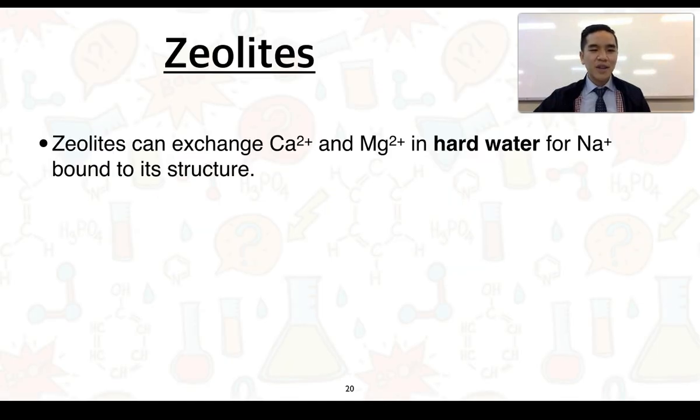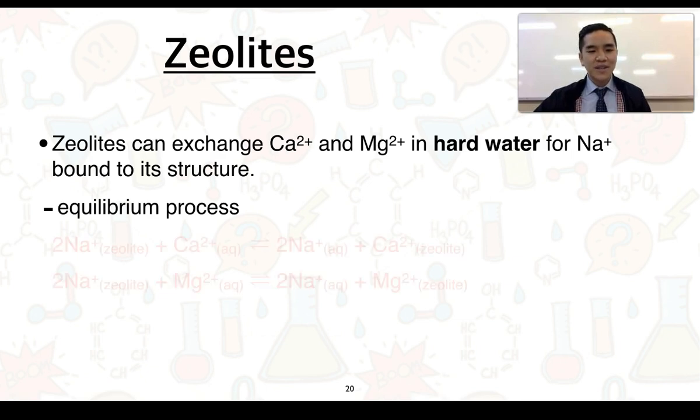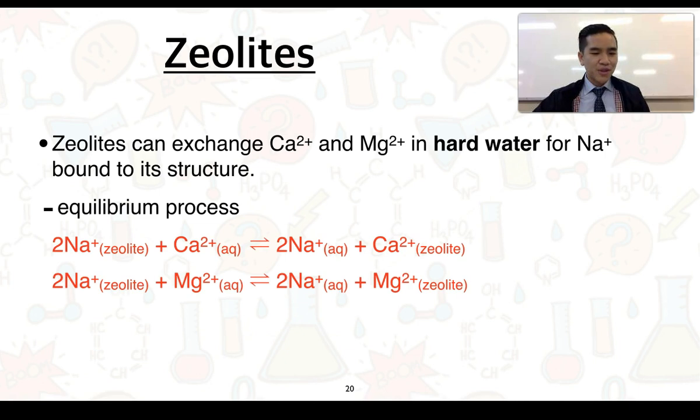To summarise, zeolites can exchange calcium and magnesium ions in hard water for sodium ions bound to its structure. It's important to note that this is an equilibrium process. We can represent this equilibrium process shown below here. So we have sodium ions bound to the zeolite structure, calcium ions in solution, existing in equilibrium with sodium ions in solution, and calcium ions attached to the zeolite. And likewise for magnesium ions in solution and adsorbed to the zeolite.